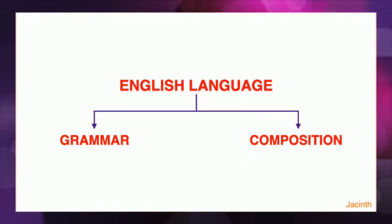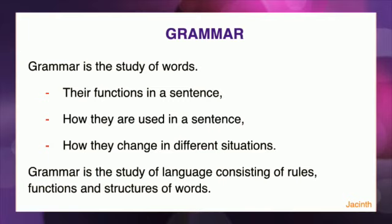In school, we study English language on two branches: English grammar and English composition. English grammar is the study of words — the study of their functions in a sentence, how they are used in a sentence, and how they change in different situations. Grammar is the study of language consisting of rules, functions and structures of words.